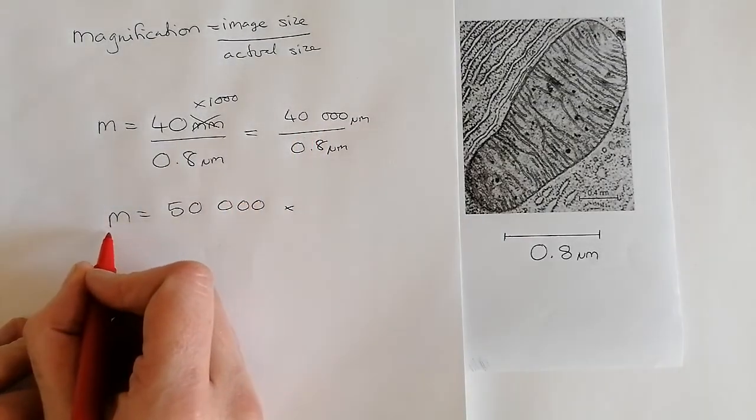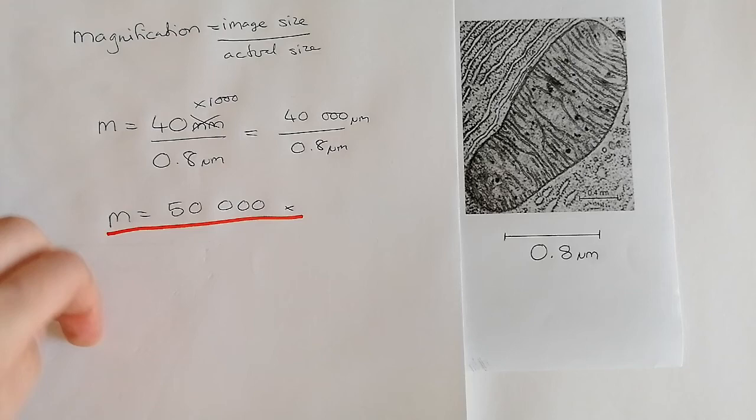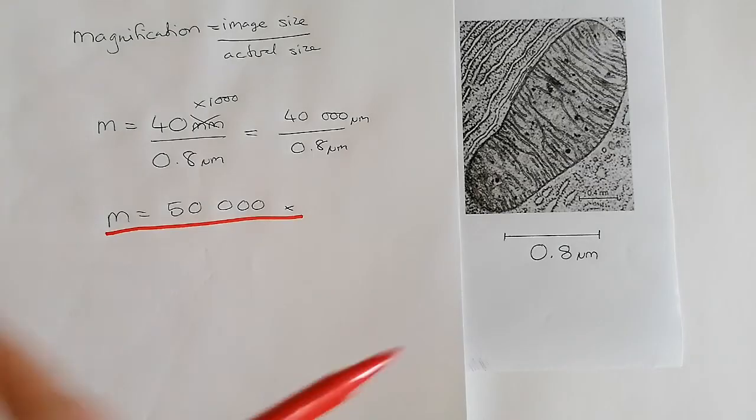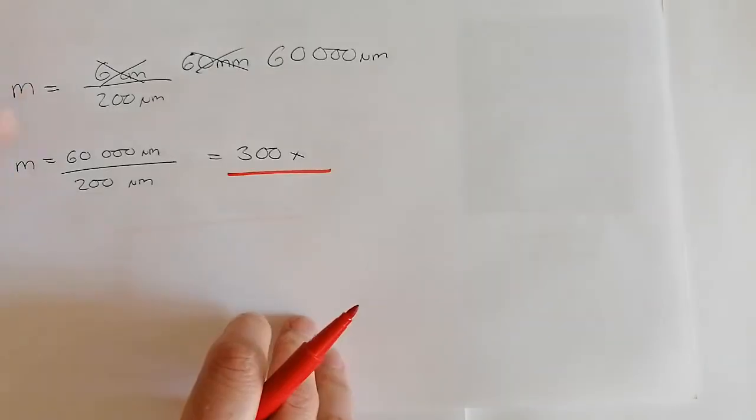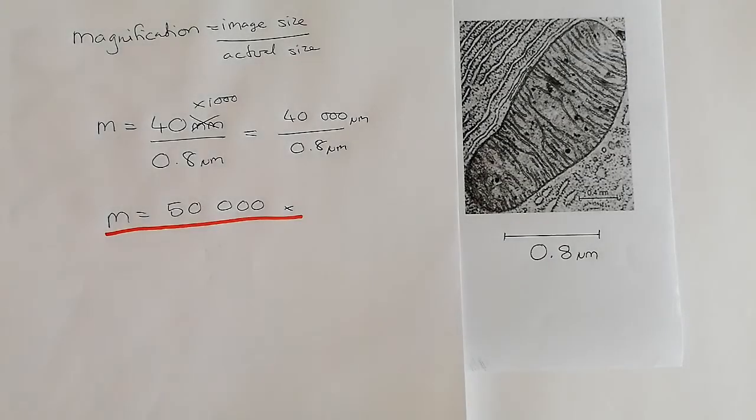And I would also suggest, especially if you have messy handwriting like I do, drawing a line under your actual answer so that when the examiner has a look at what you've done, they can find the number to be looking for because you have made it more obvious to them.